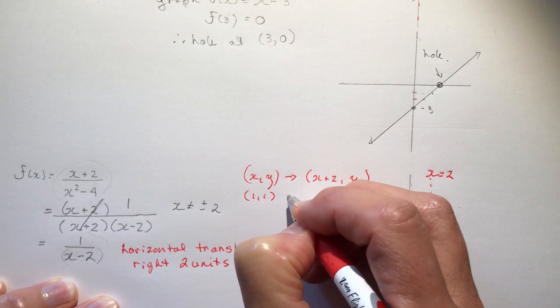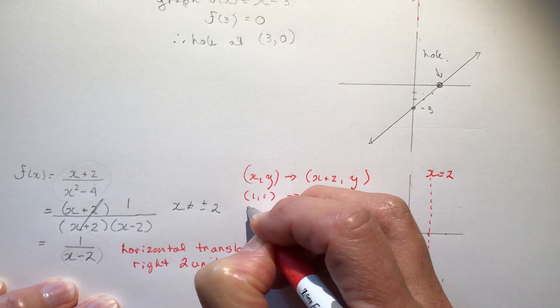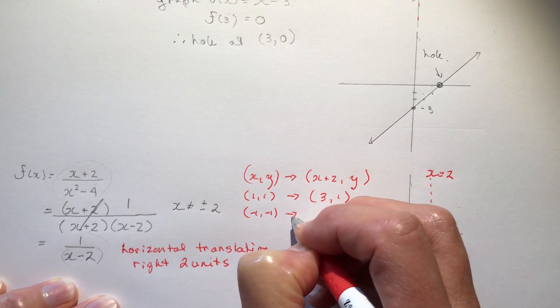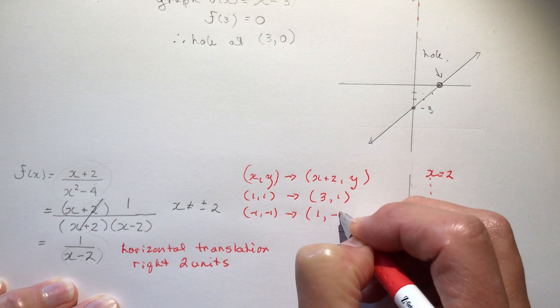So your key points (1,1) would go to (3,1) and (-1,-1) would go to (-1 plus 2 is 1, and -1). So (1,-1) and (3,1).